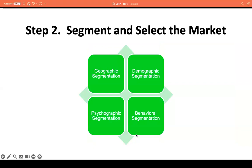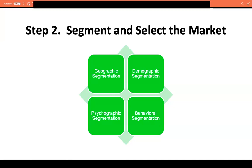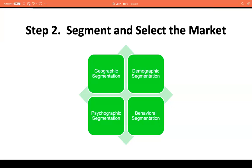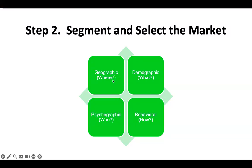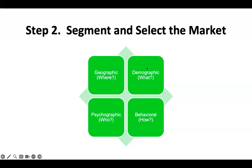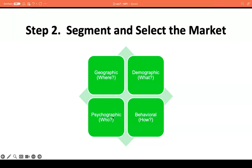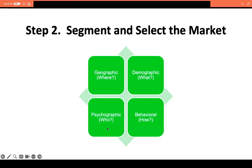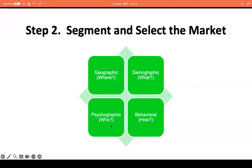How do you do market segmentation? There are different major market segmentation strategies that we can employ. These would be geographic segmentation, demographic segmentation, psychographic, as well as behavioral. When we say geographic, we are mainly focused on the where aspect. For demographic, it should be the what aspect. Psychographic is about who is going to use the product or service, and behavioral is focused on the how.